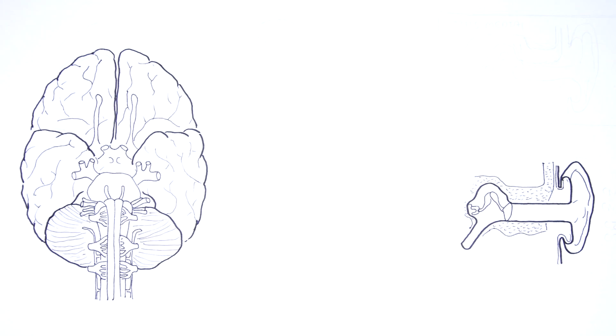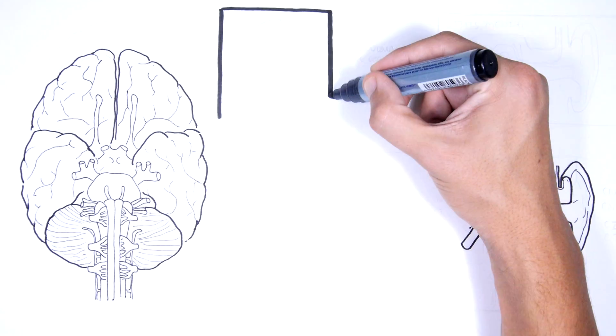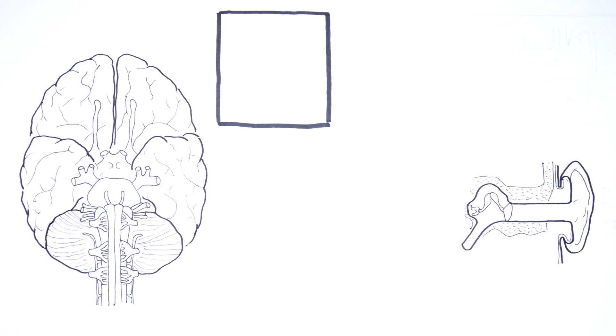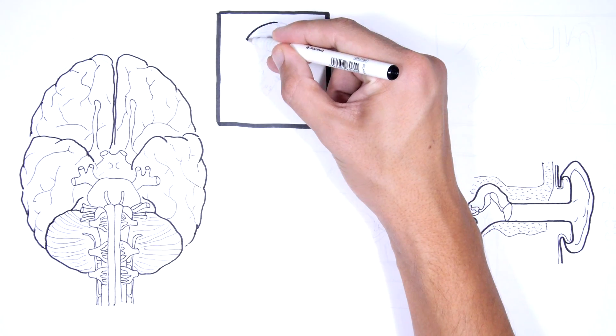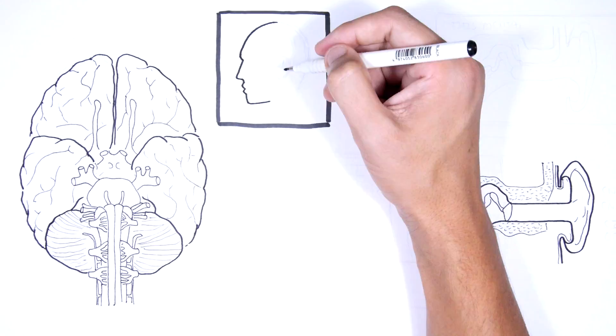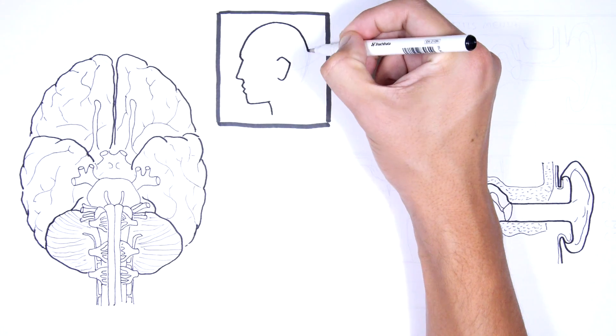Our body has 12 pairs of cranial nerves and 31 pairs of spinal nerves, eight pairs of which are actually cervical, abbreviated C.